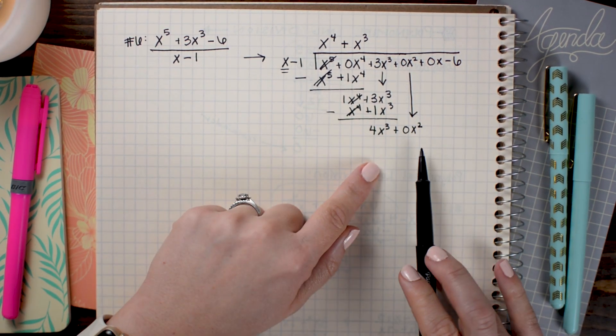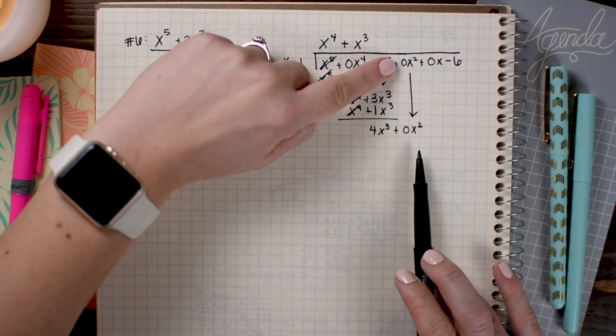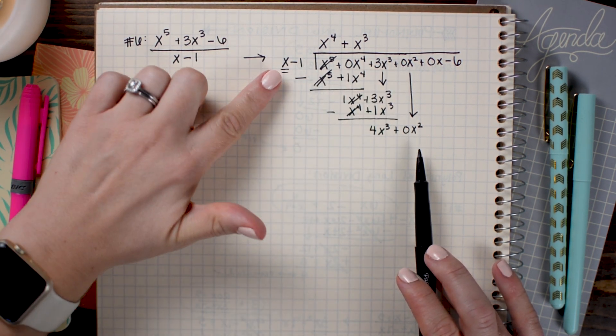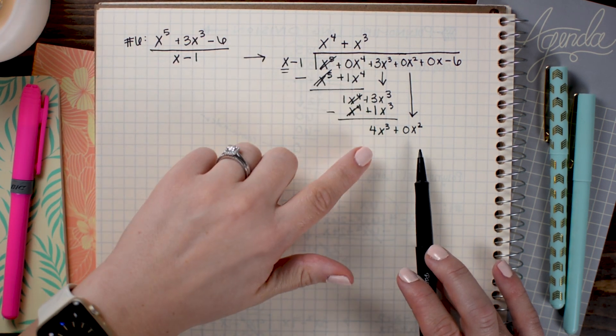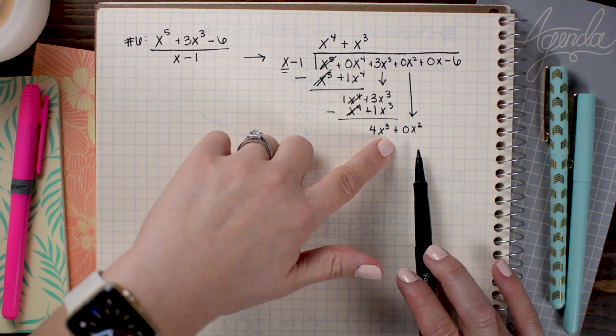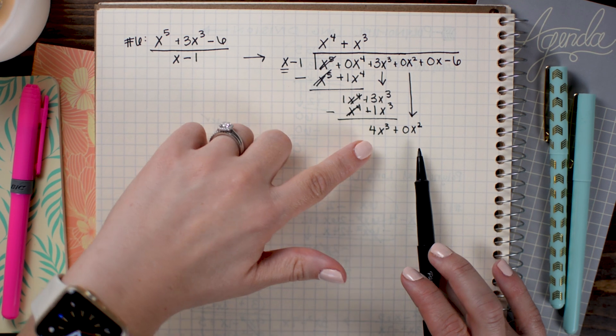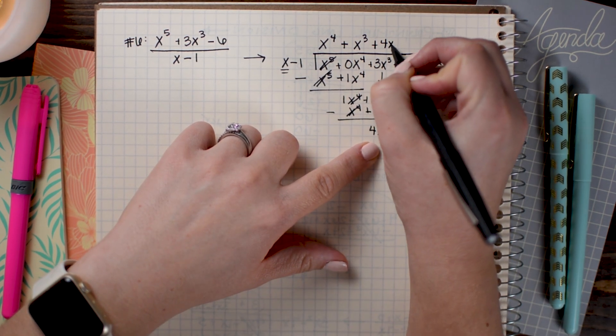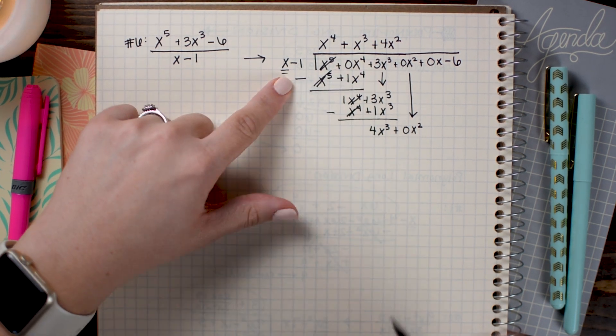Now I'm going to do the exact same process all over again. x times what gives me 1x⁴? That would be x³. So I'm going to write a positive x³ up here and then multiply it through. So I went ahead and brought down the next term which is 0x² and I'm going to start my process all over again.